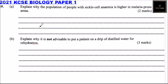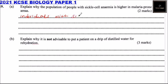Question number 19: explain why the population of people with sickle cell anemia is higher in malaria-prone areas. The reason is that people who suffer from sickle cell anemia — that is, individuals with sickle cell traits — don't succumb to malaria.